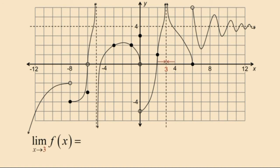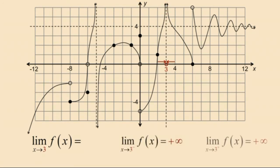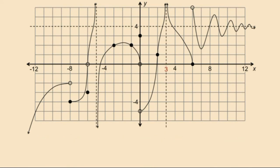Now we take a look at the limit as x approaches 3 of f of x — remember this is a two-sided limit. Notice that in this case the one-sided limits are both increasing without bound to positive infinity. Therefore we say that our two-sided limit is equal to positive infinity. The function value at x equals 3 is undefined, since 3 is not in the domain of our function.